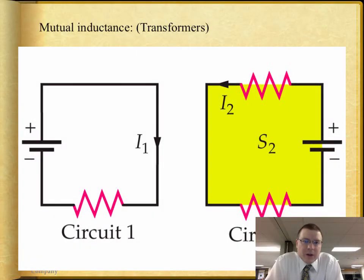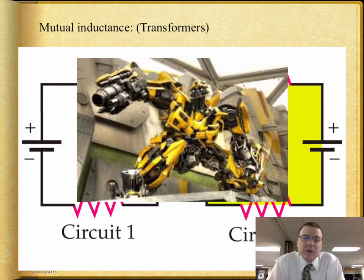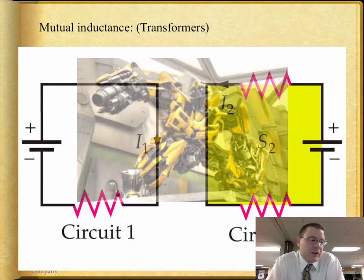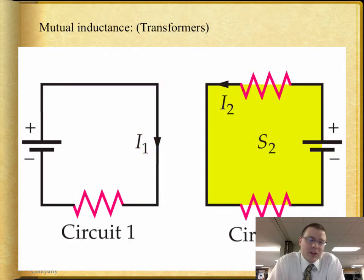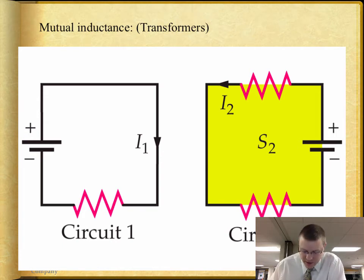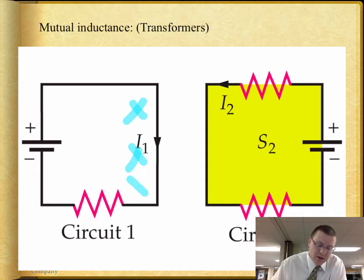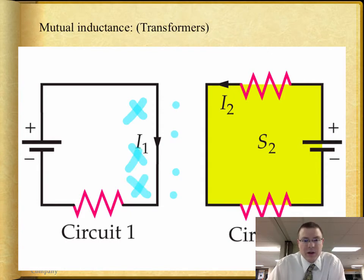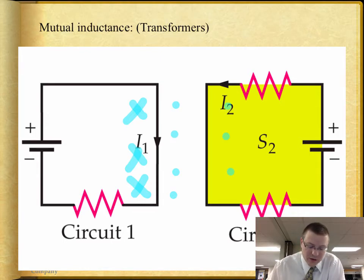What we want to talk about now is something called mutual inductance, or what we use them as — we use them as transformers. When we talk about a transformer, what we're saying is that we have one circuit with current going through it, into the page on this side and out of the page on this side of the wire. You have those loops of magnetic field, and those loops of magnetic field stretch out into circuit two.